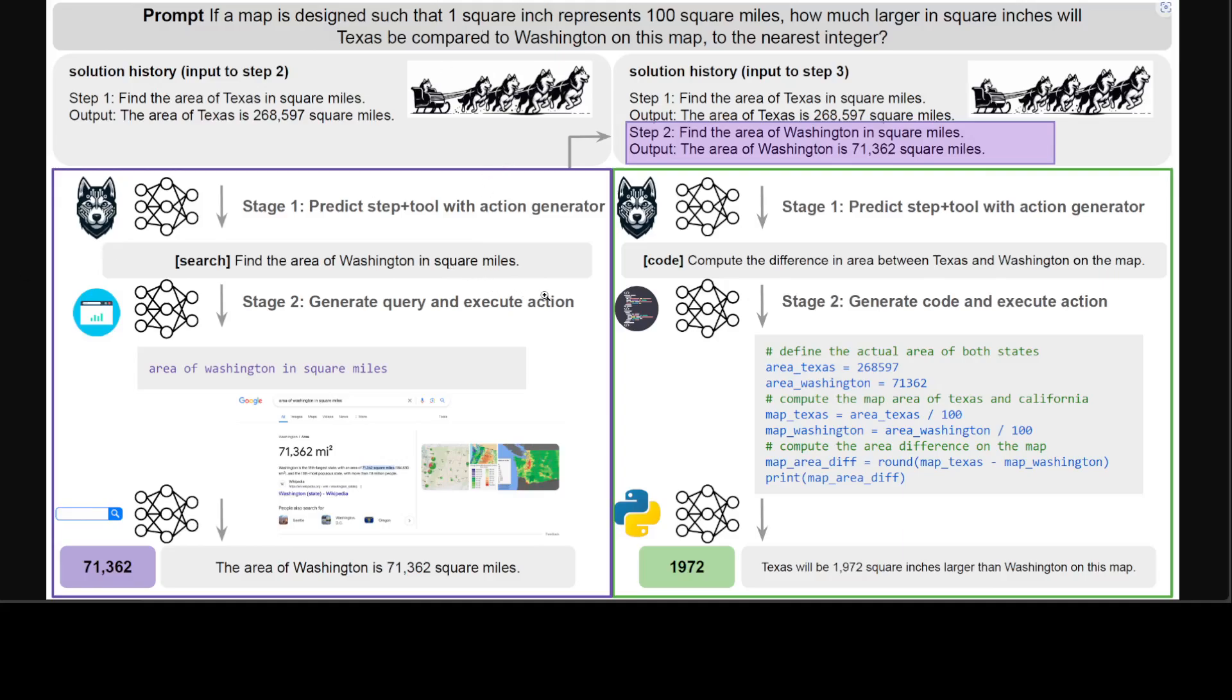If you look again here, Husky is iterating between the two stages until it arrives at a terminal state. So this is stage one: predict step plus tool. And stage two is generate query and execute action. The first module is this action generator.